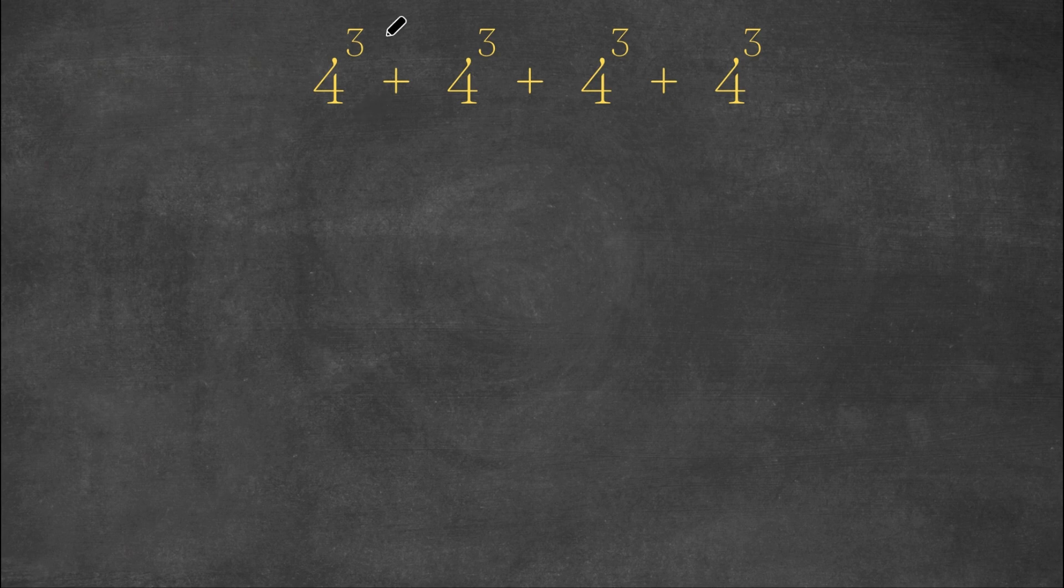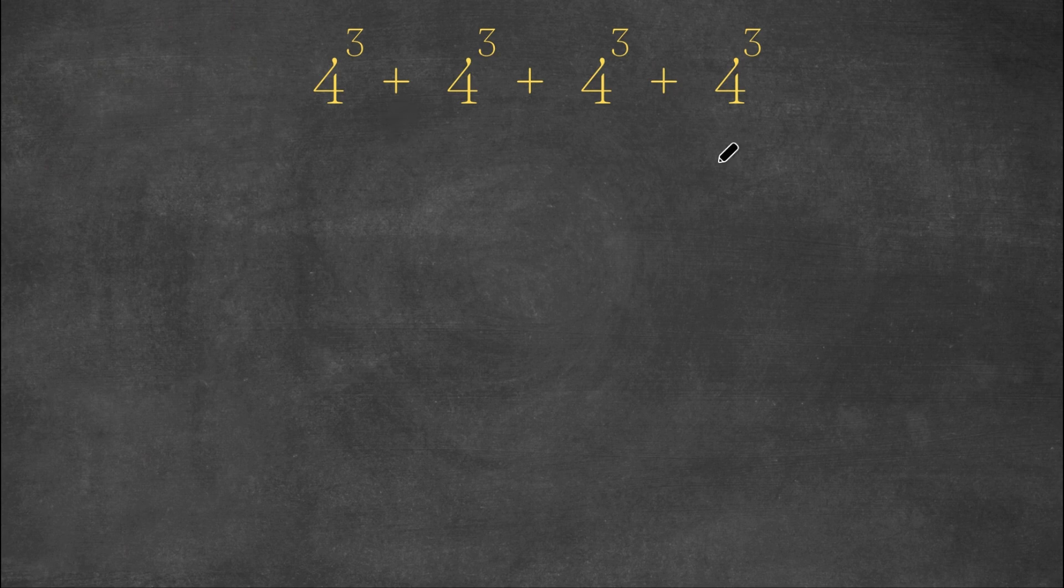So we have 4 to the power of 3 plus 4 to the power of 3 plus 4 to the power of 3 plus 4 to the power of 3. Now what I'm first going to do is factor out 4 to the power of 3 from this problem.